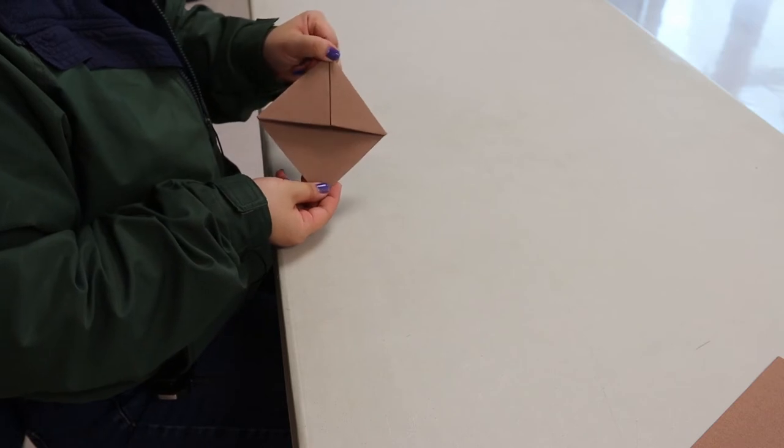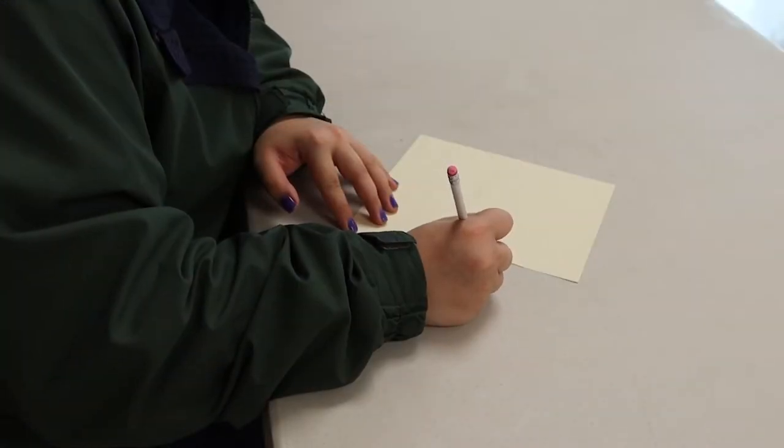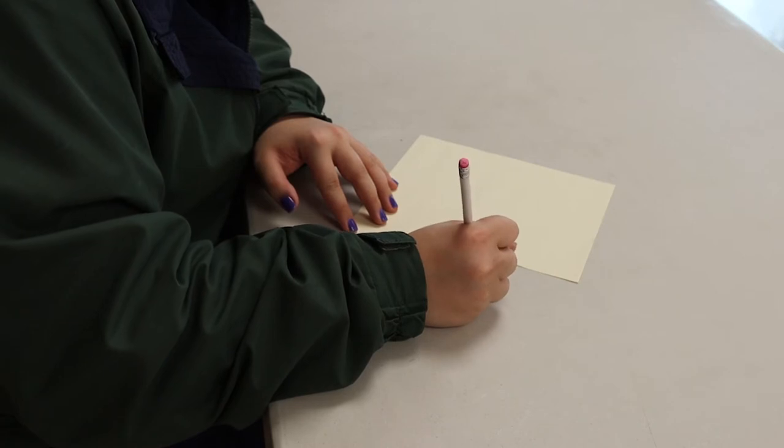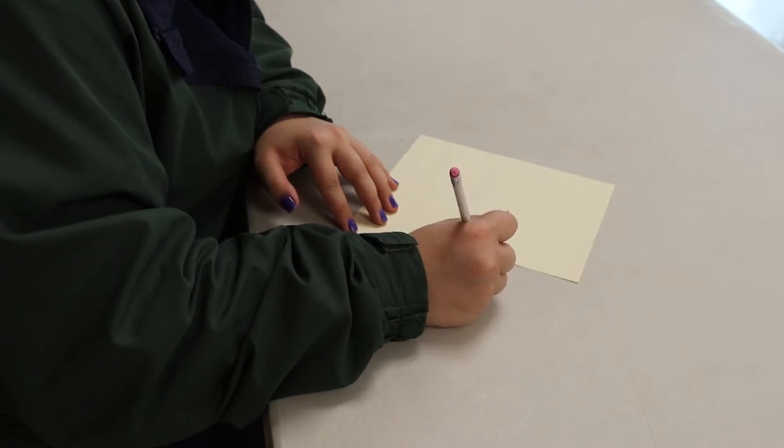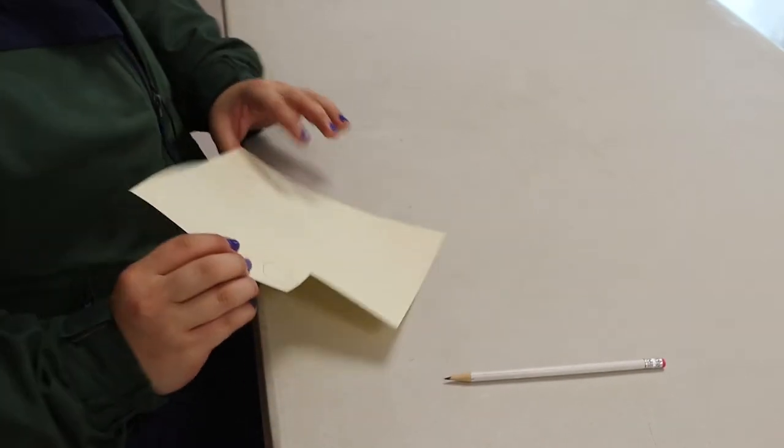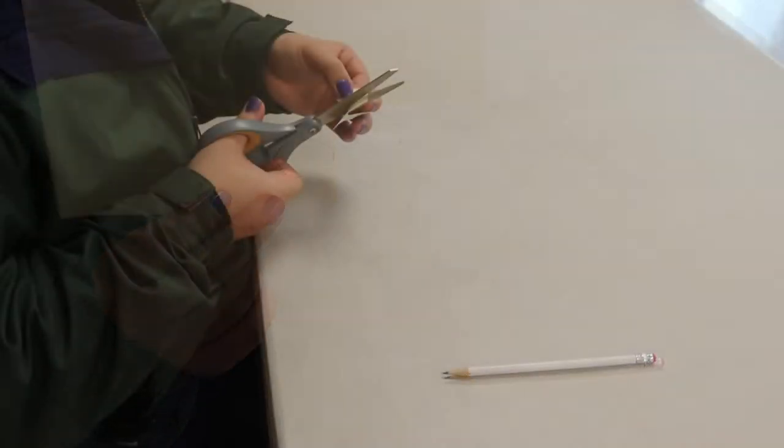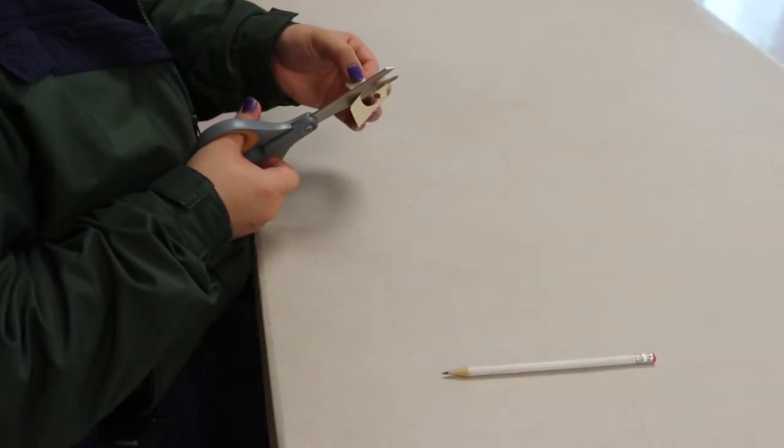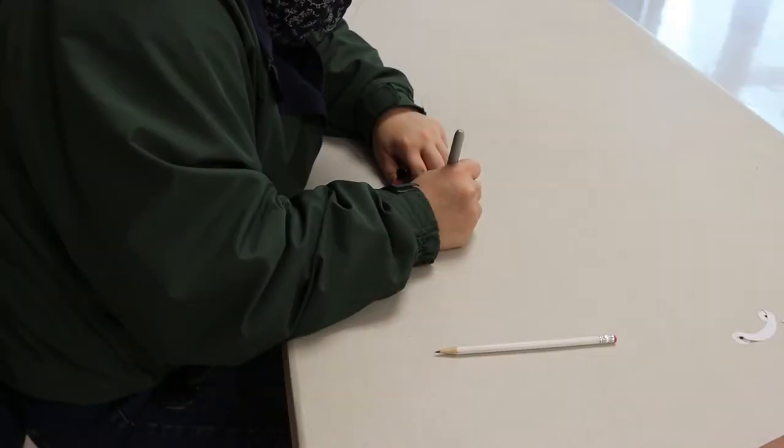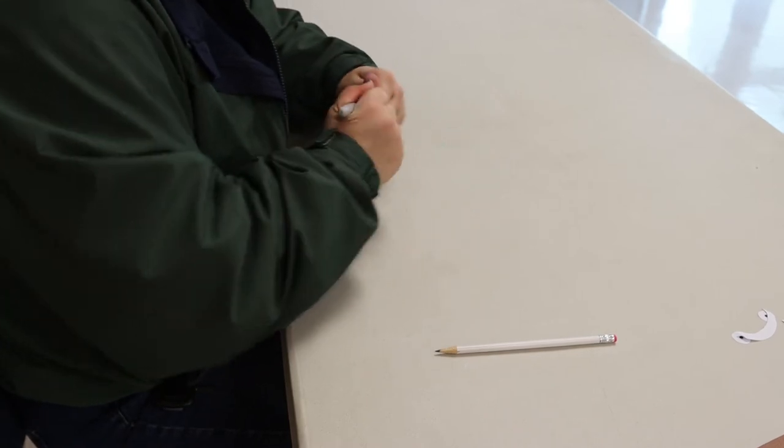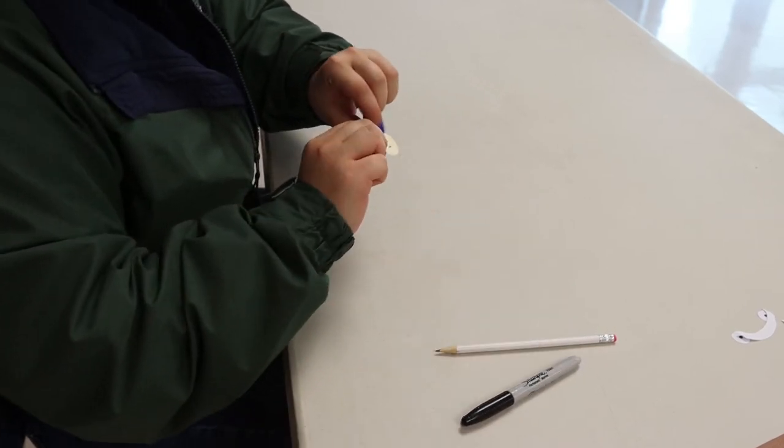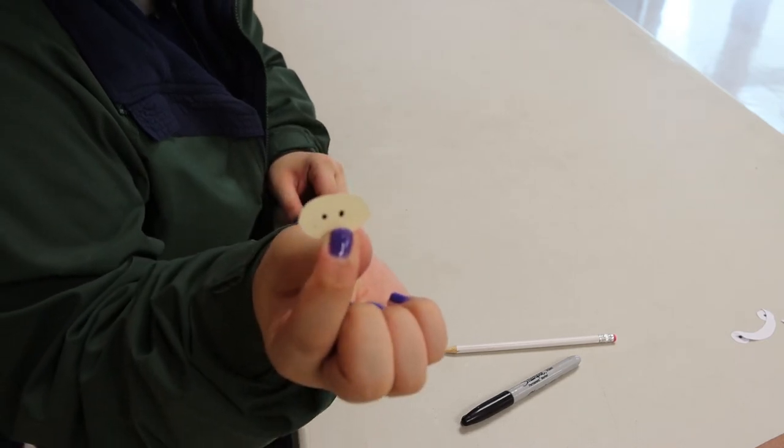Now we're going to make the nose. You're going to need your tan paper, or if you don't have tan you can use white, and your pencil. We're just going to draw an oval. I'm going to take my black marker and do two dots in the center. Here's my finished nose.